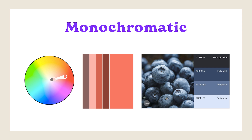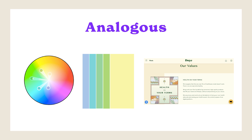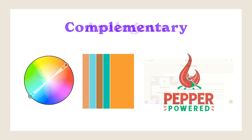Moving on to analogous color schemes — these involve selecting a main color and pairing it with the two colors adjacent to it on the color wheel. You can also incorporate two additional adjacent colors, creating a five-color scheme. Analogous color schemes are known for their harmonious and cohesive look, as they do not rely on high contrasting colors. They are often used to create softer designs, such as those inspired by autumn or spring colors. For example, the eco-friendly health company Your Day employs an analogous scheme of pastels and earthy tones.